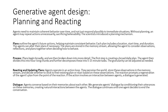Plans begin broadly and are then broken down into more detail. The first step is creating a broad daily plan. The agent then divides this into hour-long chunks and further decomposes these into five to fifteen-minute tasks. Agents operate in an action loop: they perceive the world, store observations in the memory stream, and decide whether to stick to their existing plan or react. The reaction prompts a regeneration of the agent's plan from the point of the reaction. If the action involves an interaction between agents, a dialogue is generated. Agents converse based on their memories about each other, creating natural interactions, and the dialogue continues until one agent decides to end the conversation.